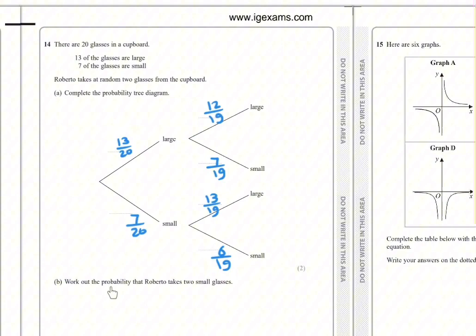We work out the probability that Roberto takes two small glasses. So small and small, so multiply them: 7 over 20 times 6 over 19 equals 21 over 190.